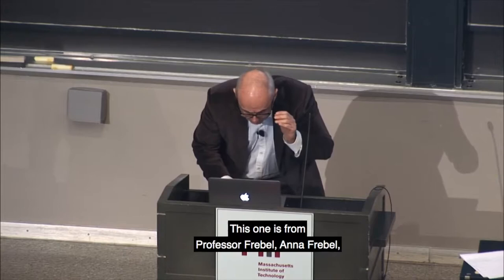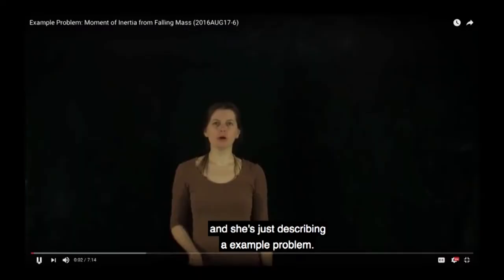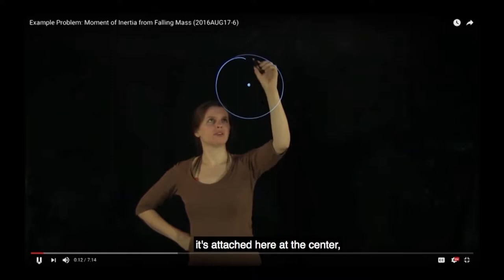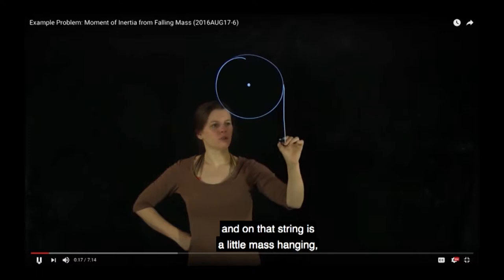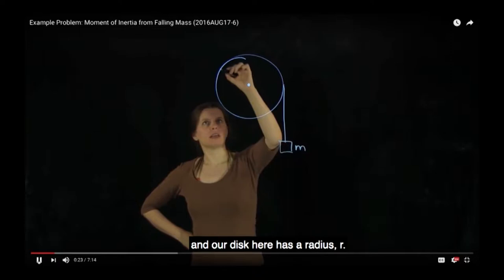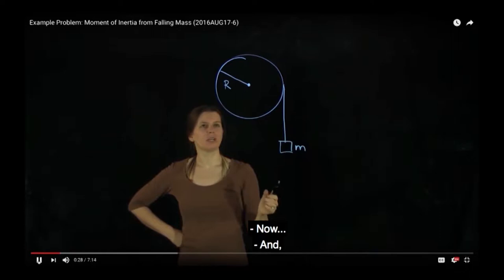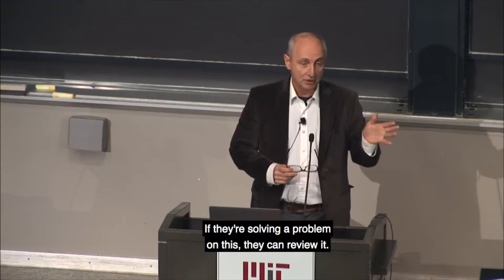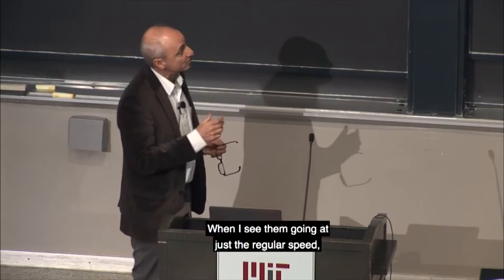The next example is from Professor Anna Freeble. She is describing an example problem: determine the moment of inertia of a big wheel. Here we have a big wheel attached at the center, with a string going around it and a little mass hanging on that string. The disk has a radius R, and we want to know the result in a little experiment. Students immediately move it up to twice the speed because it's very slow. They look at this whenever they want — if they're solving a problem, they can review it, stop it, go back, and use it whenever they want.